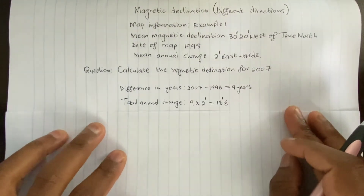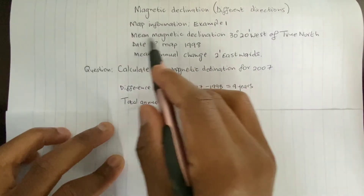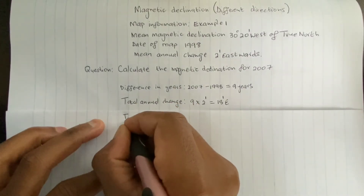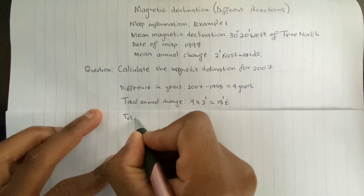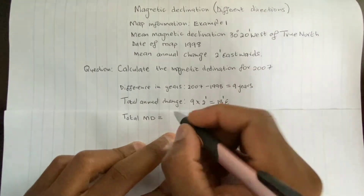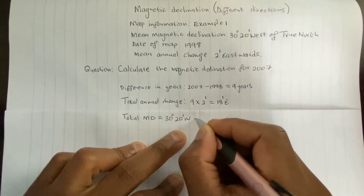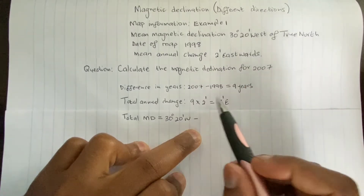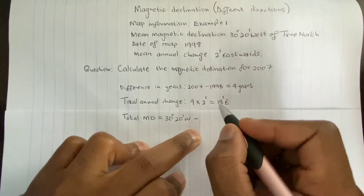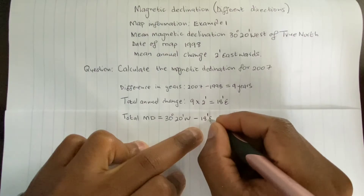Now that I've calculated the total annual change, I need to calculate the total magnetic declination. The mean magnetic declination is 30 degrees 20 minutes west of true north. Because I have different directions, I must subtract, so: 30 degrees 20 minutes west minus the total annual change of 18 minutes eastwards.